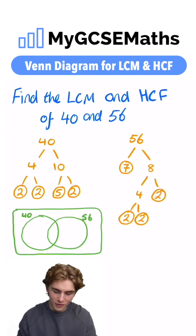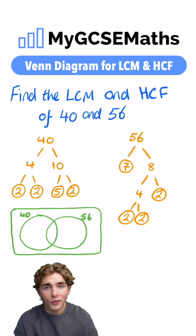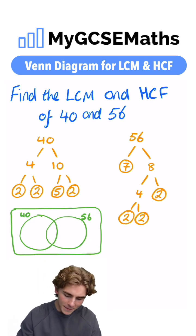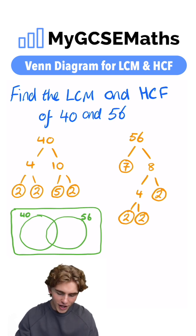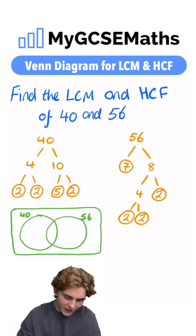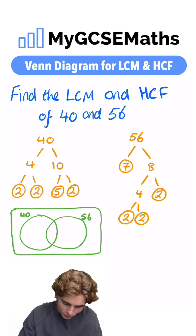You can see that we've also drawn the Venn Diagram. In order to work out the numbers which are going to be in the middle of the Venn Diagram, we're going to look for the prime factors which are in both of the factor trees. We can see that both factor trees have a two, a two, and a two. So we're going to write three twos in our middle section: two, two, two.